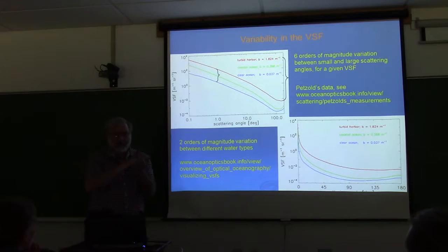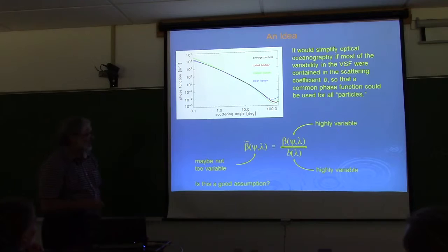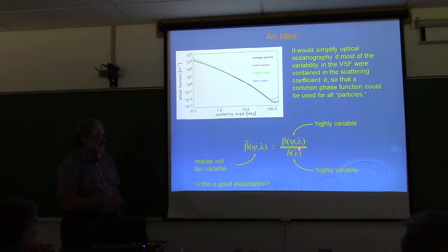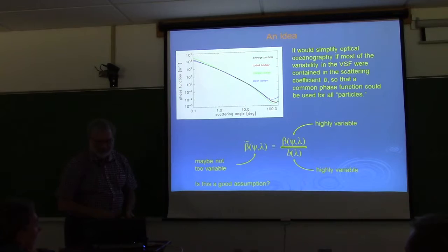If you look at those Petzold curves, they differ a lot in magnitude but have roughly the same shape as a function of scattering angle. Going back to the idea of splitting the VSF into a magnitude part and a shape part: if we take each curve and divide by its scattering coefficient, the resulting phase functions lie on top of each other pretty well — some differences at small angles and in the backscatter region, but generally the same shape.